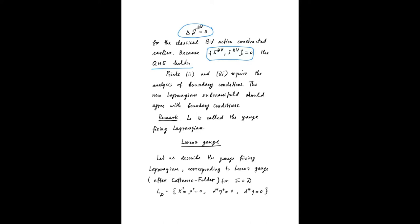Parts two and three require the analysis of boundary conditions. The new Lagrangian submanifold L should agree with boundary conditions. We will discuss it in a moment. This Lagrangian submanifold is called the gauge-fixing Lagrangian.